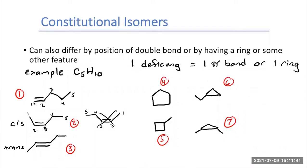When looking at constitutional isomers, it's really important to first figure out if you have any deficiencies, then play around with the structures. With the cis isomer, we attempted to draw a third cis isomer, but it ended up just being a mirror image — so that didn't count. Figuring these out involves a bit of trial and error. The larger the molecule, the more possible constitutional isomers you can get.